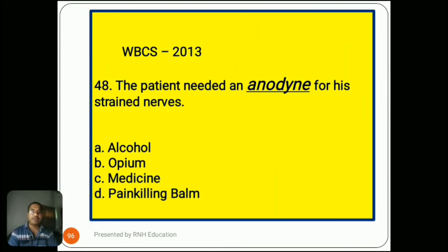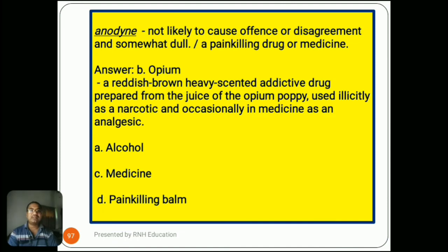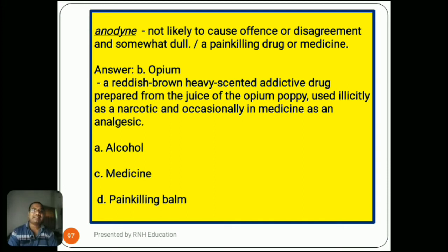Question number 48, from WCS preliminary 2013: 'The patient needed an anodyne for his strained nerves.' Options are A) alcohol, B) opium, C) medicine, D) pain-killing drug. Anodyne means not likely to cause offense or disagreement, and somewhat dull. Its second meaning is a pain-killing drug or medicine. According to the second meaning, the answer should be B) opium — a reddish-brown, heavy, scented, addictive drug prepared from the juice of the opium poppy, used as a narcotic and occasionally in medicine as an analgesic.